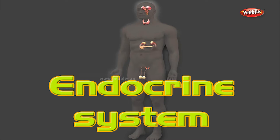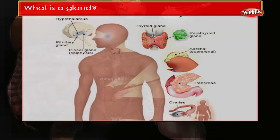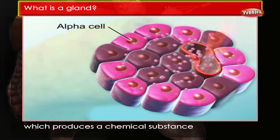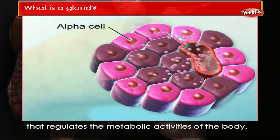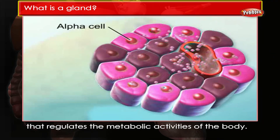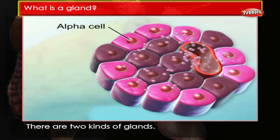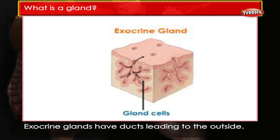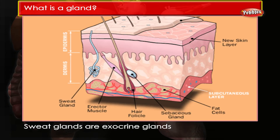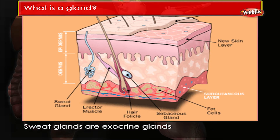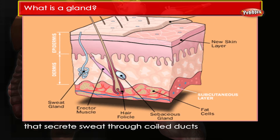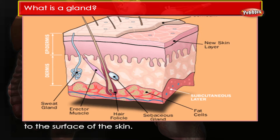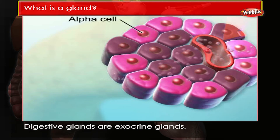Endocrine system. What is a gland? A gland is an organ which produces a chemical substance that regulates the metabolic activities of the body. There are two kinds of glands. Exocrine glands have ducts leading to the outside. Sweat glands are exocrine glands that secrete sweat through coiled ducts to the surface of the skin.